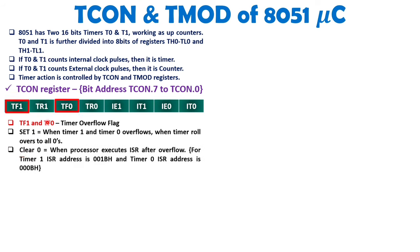That bit gets cleared to 0 automatically when the ISR address is executed by 8051. Timer 1 has ISR address 001B hex and timer 0 has ISR address 000B hex. Once the interrupt is generated, this bit becomes 1, but when program control gets transferred to the ISR address, 8051 will make this bit 0.